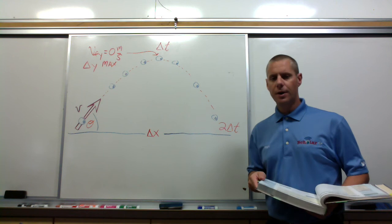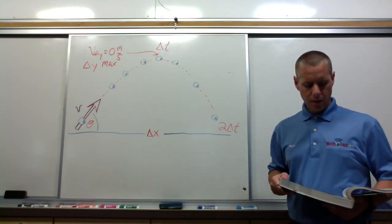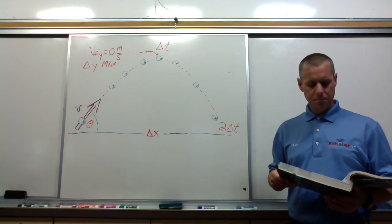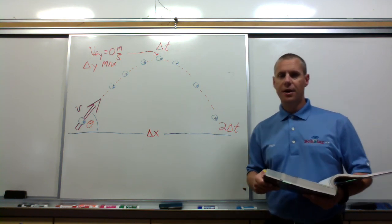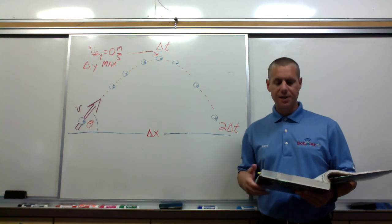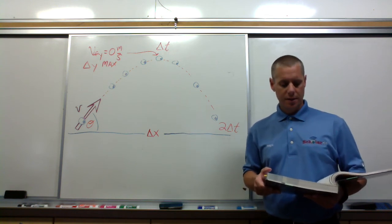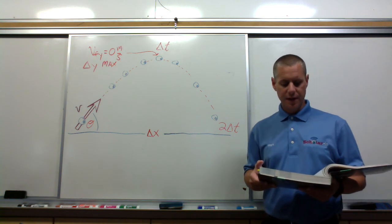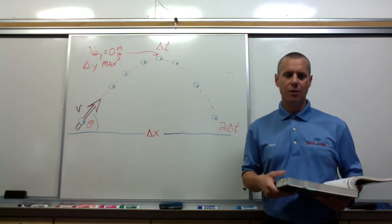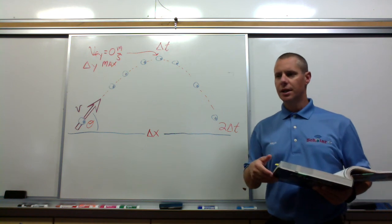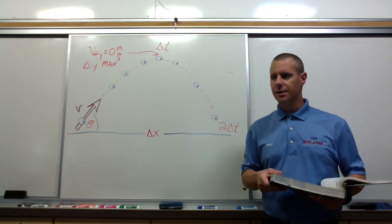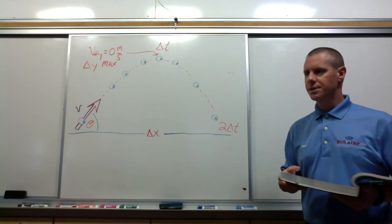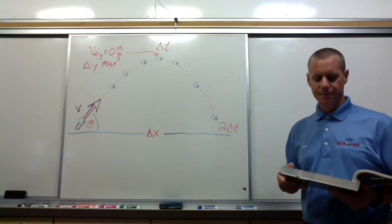We'll do number two on page 101. I'll answer it exactly how it's laid out, which is a little bit of a challenge, and then we'll attack it again by not just asking what is the maximum displacement for this golf ball hit at a 25-degree angle. We'll find out everything about it — how high it went, how long it was in the air, its initial vertical velocity, and its velocity in the x direction.